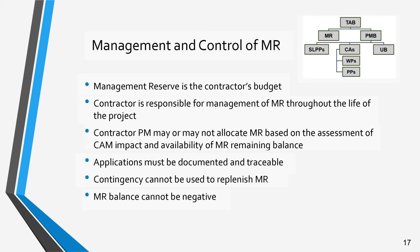The contractor PM must ensure that MR will be used prudently during the life of the project. Depleting MR while there are significant project risks greatly increases the chances of a contract overrun and is an early warning sign for a probable over-target baseline. It is important to note that MR is never required to be allocated. MR allocation is subject to the PM's approval based on the CAM's definition of the requirement for new scope and any project impact, and whether any MR remains that is available for allocation.